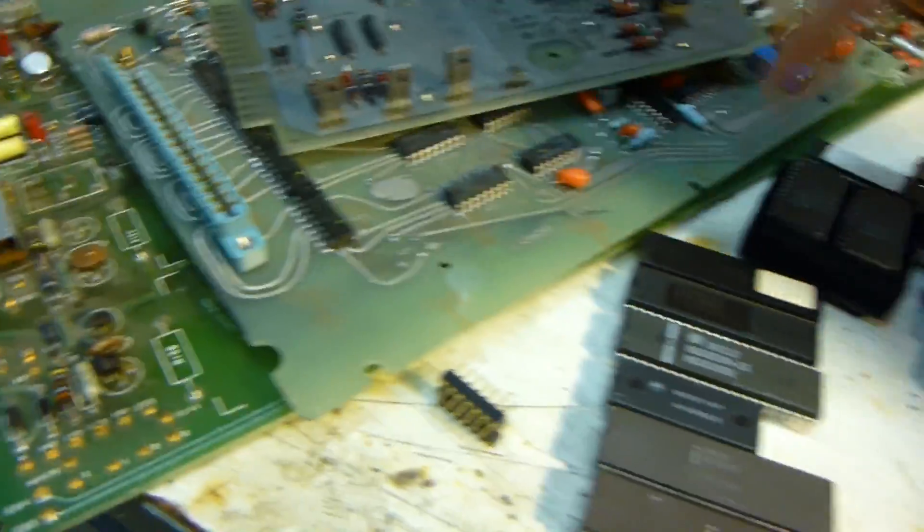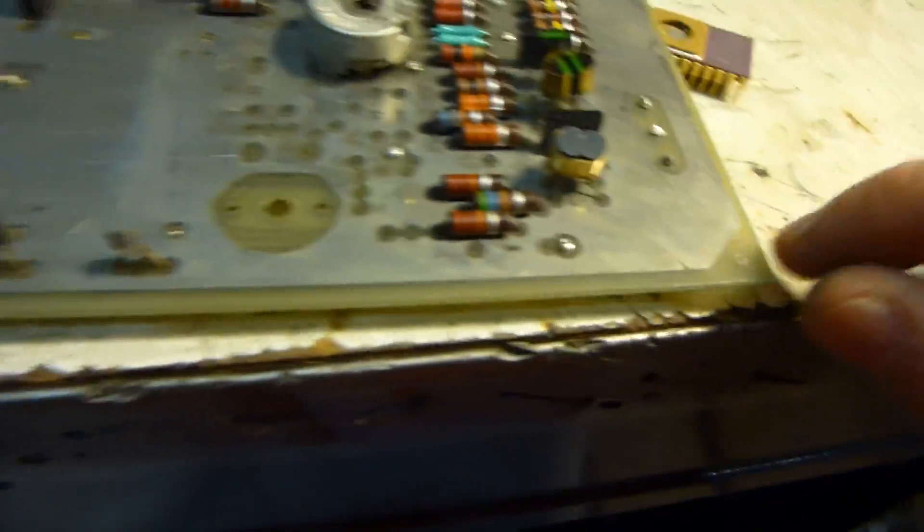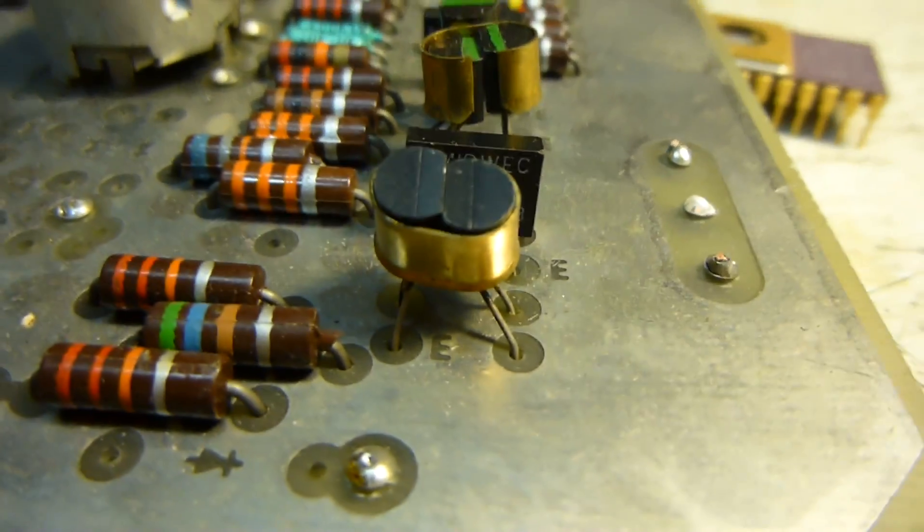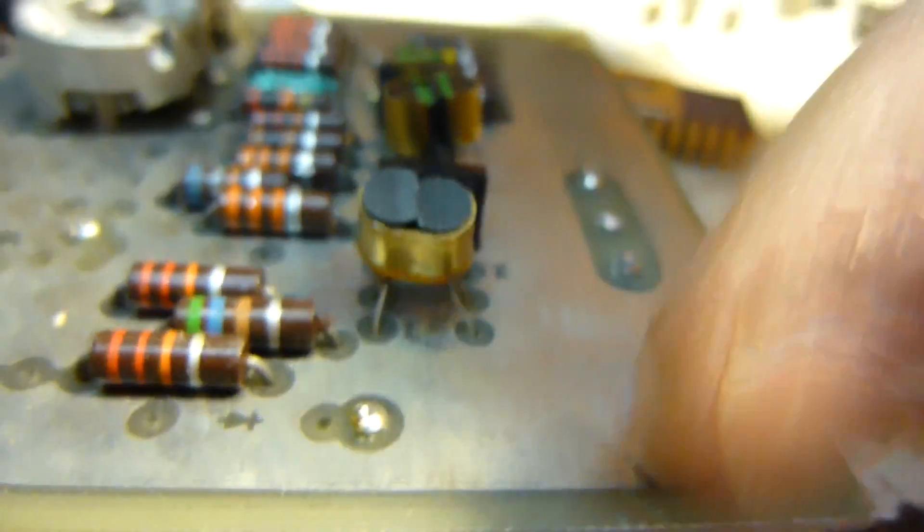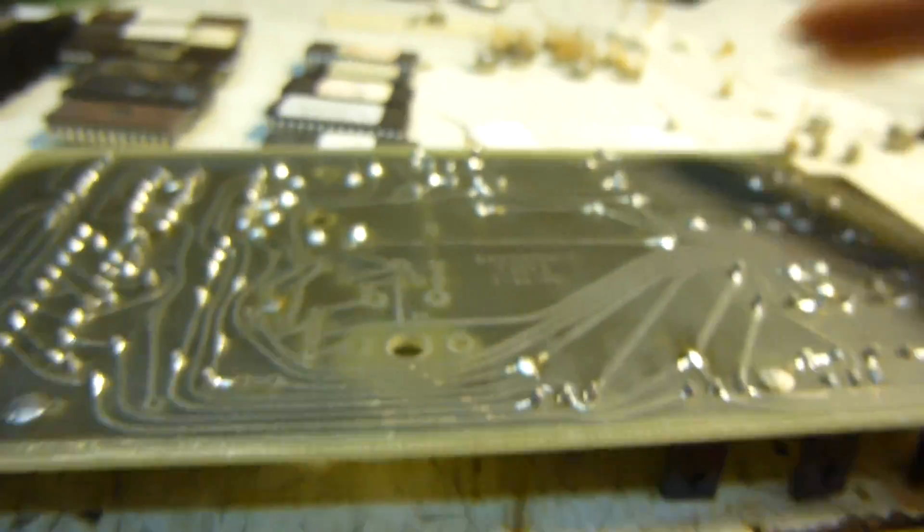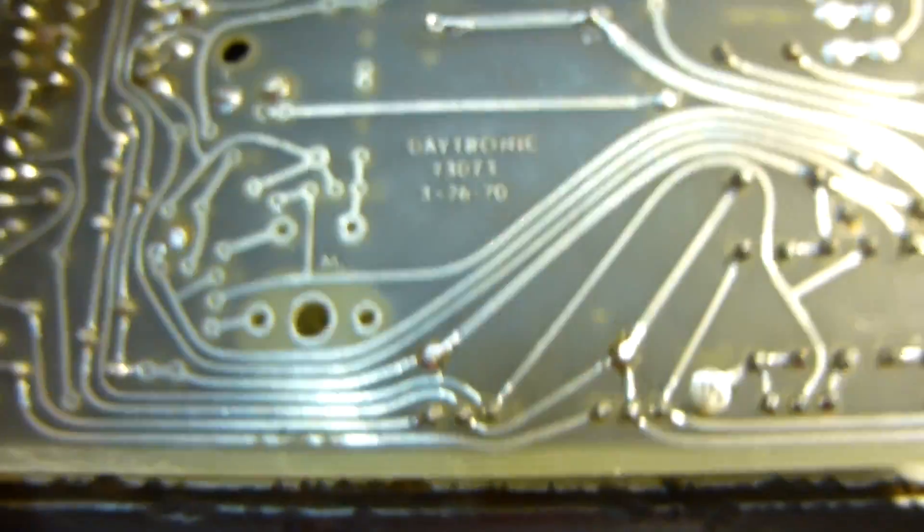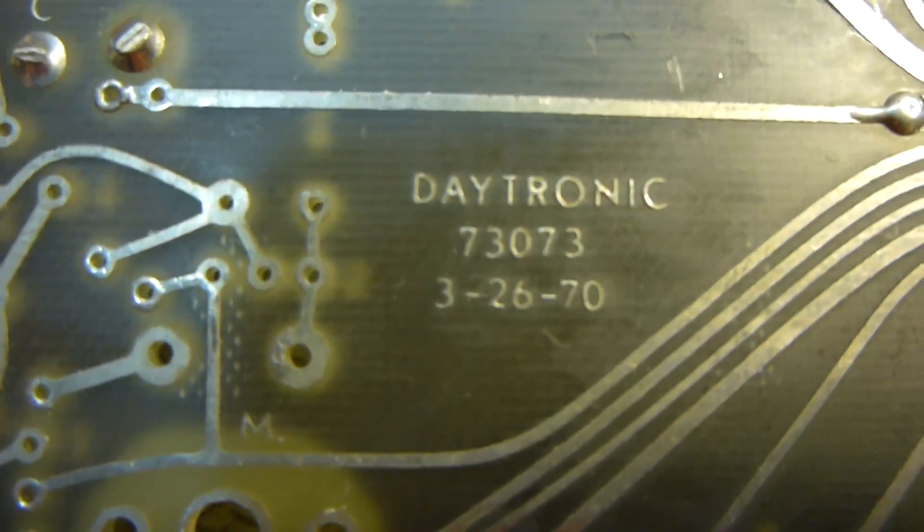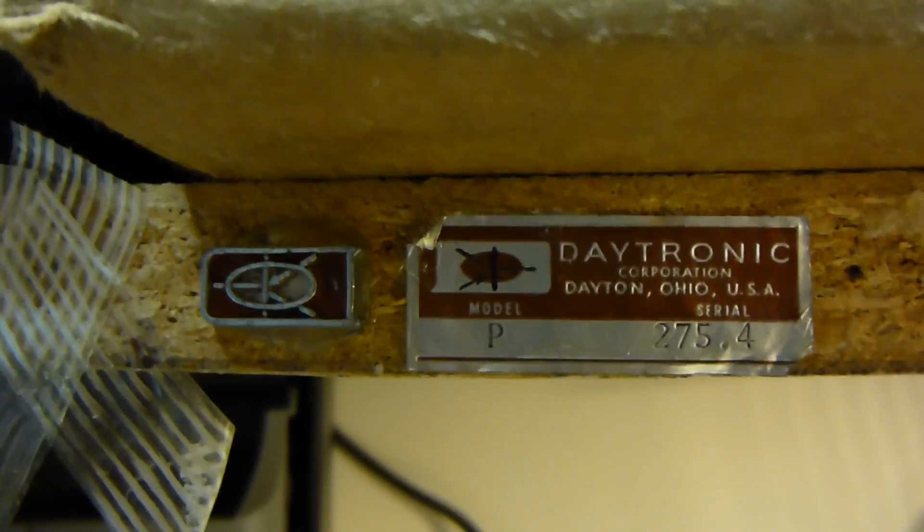And then I've got some PCBs as well, like this one. You can see these transistors here are actually connected together so that they have the same, so that they're at the same temperature. But this is 1970 Daytronic, which is actually, this is Daytronic as well.